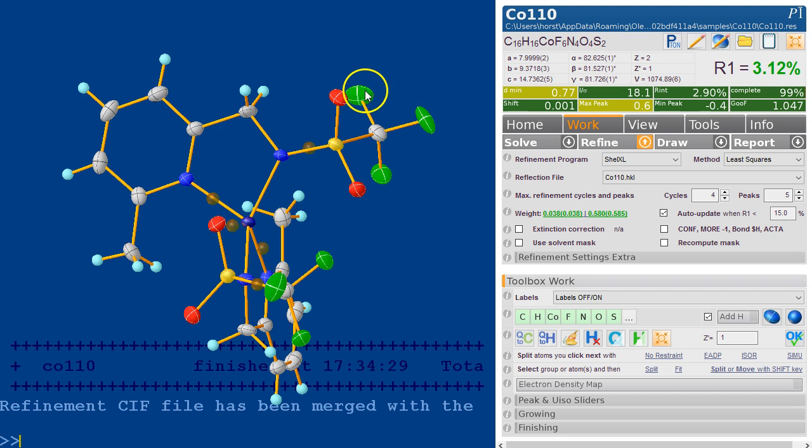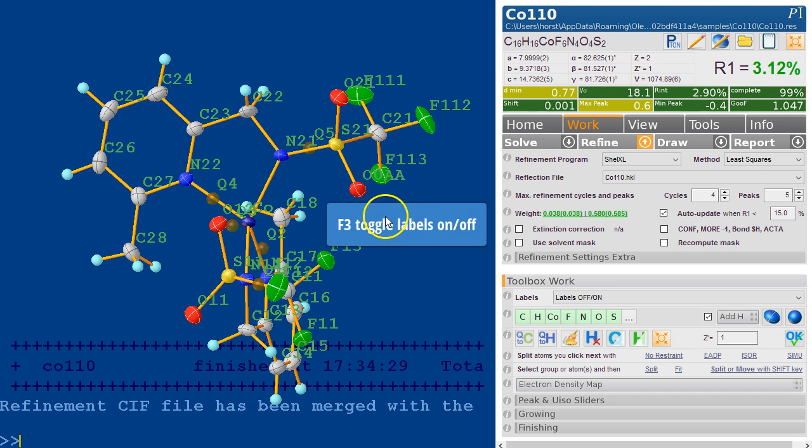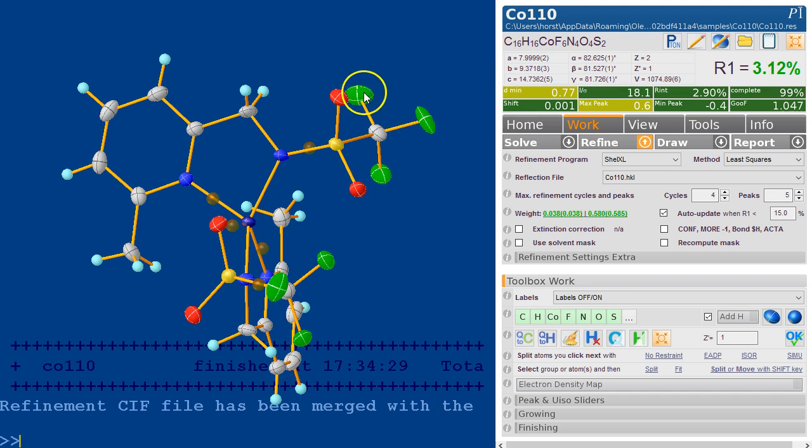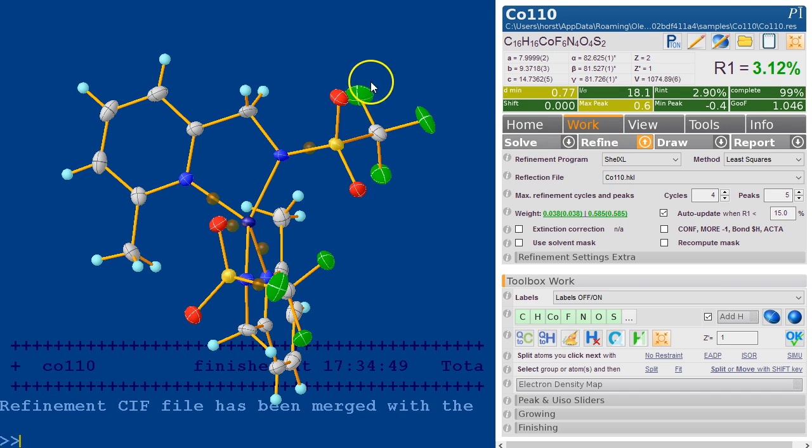If you now rename these atoms here, we select some of those and we type name, I don't know, 111. F3 toggles the thing. So this is F111, 112, 113. And if you refine this, the restraints will stay in place just the same.